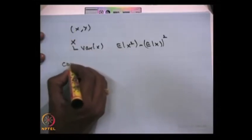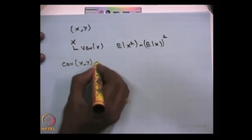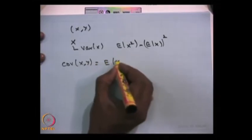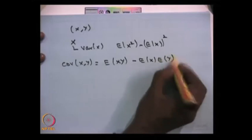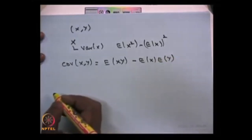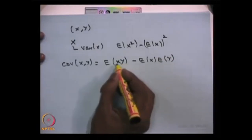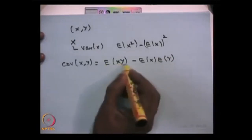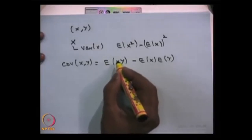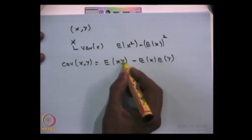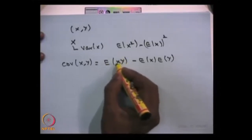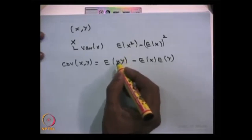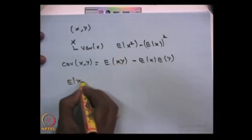Now I am going to define the covariance of X and Y. The covariance of X, Y is the expectation of X times Y minus the expectation of X times the expectation of Y, provided the expectations exist. To find E[XY], based on whether the random variable is discrete or continuous, you can use the functions of random variables method. Note that even if you do not know the distribution of X times Y, you can always find the expectation of XY.